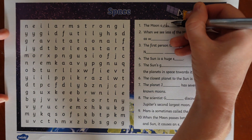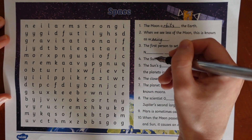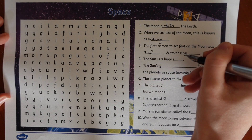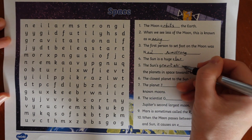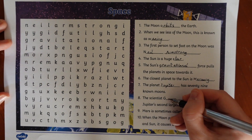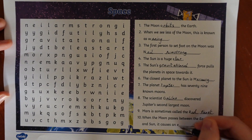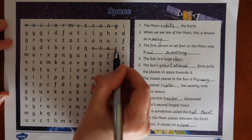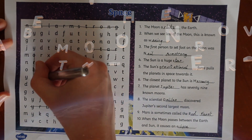This word search begins with a closed procedure activity where children must use their knowledge or research the correct word to fill in the gap in the sentences before finding the word in the word search. It's a great way to increase familiarity with key language around space and the solar system, and could be used as an opening to independent writing activities.